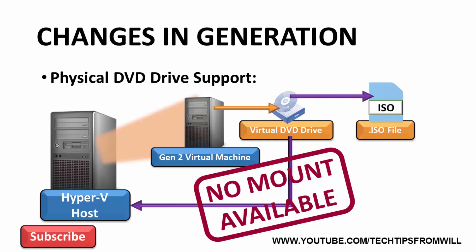To install an operating system onto a Generation 2 virtual machine using a virtual DVD drive, you now have no choice but to use an ISO file. This was done because the majority of vendors today are selling Microsoft operating systems as ISO file downloads rather than on physical disks. Once you have the ISO file, you can burn it to a DVD if required, or simply mount it directly to the virtual DVD drive on your virtual machine and install the operating system.